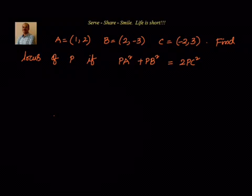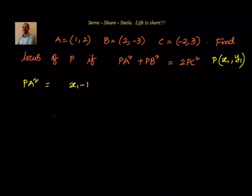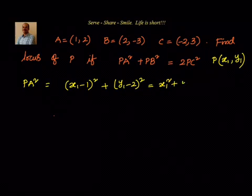Now, we know that PA is nothing but the distance between point P and A. Let us start with saying that P is a point on the locus with coordinates x1 comma y1. Then we will find out what PA square is first: PA square equals x1 minus 1 whole square plus y1 minus 2 whole square, which equals x1 square plus y1 square minus 2x1 minus 4y1 plus 5.